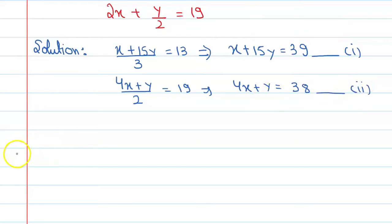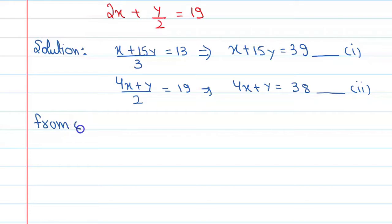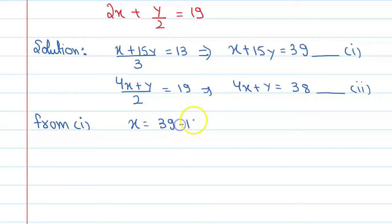Now if we want to use the substitution method, from equation 1 we can express x. From equation 1, x is equal to 39 minus 15y. Let's call this equation number 3, which we will use later.